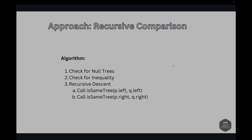Next is recursive descent. Here, we recursively check the left subtree and right subtree of the current nodes. We call the isSameTree method for both left and right subtrees to compare the trees, then return the result of the logical AND of these two recursive calls. This ensures that both subtrees must be identical for the current trees to be considered the same.